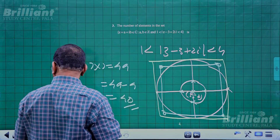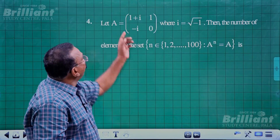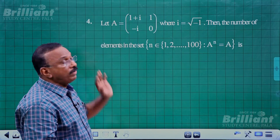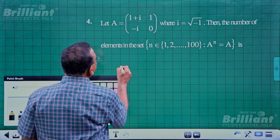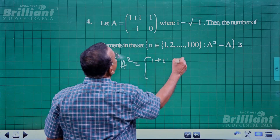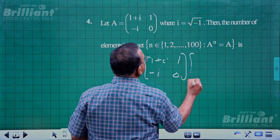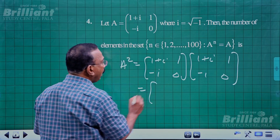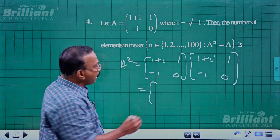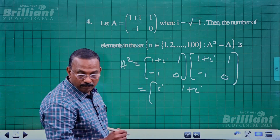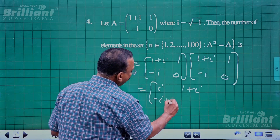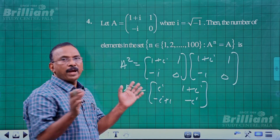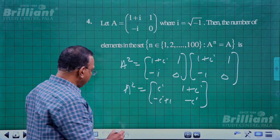Question 4 involves a matrix A with complex entries including i. It is not purely a complex number problem but a matrix problem. Computing A² by matrix multiplication of A = [[1+i, 1], [-1, -i], [... 0]] gives a specific matrix. Then A⁴ = A² · A² = I, the identity matrix.